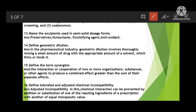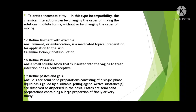Define adjusted and tolerated chemical incompatibility. Adjusted incompatibility: the chemical interaction can be prevented by addition or substitution of one of the reacting ingredients with another of equal therapeutic value. Tolerated incompatibility: the chemical interaction can be managed by changing the order of mixing the solutions in dilute form. In dilute form, substances may change regardless of mixing order — this is known as tolerated incompatibility.